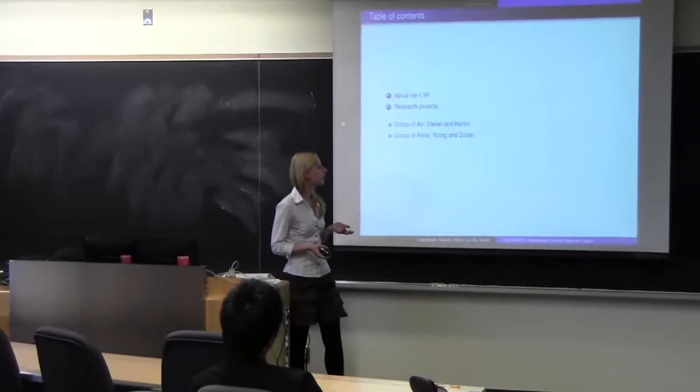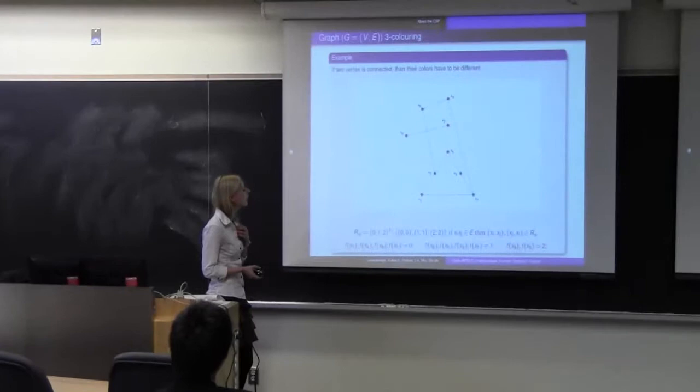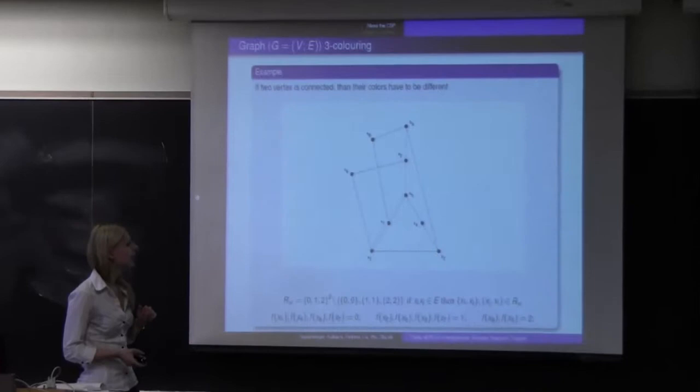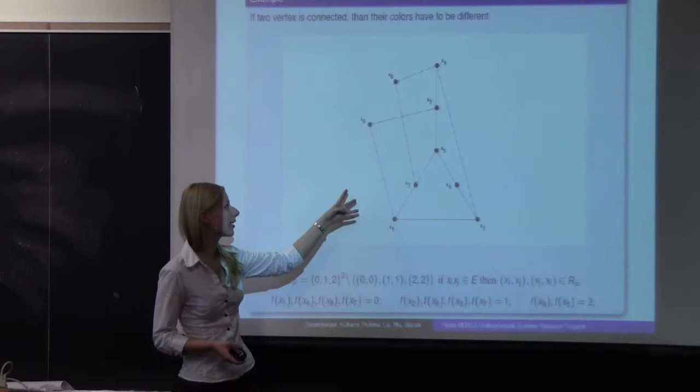First, let me tell you what is CSP — constraint satisfaction problem. For example, if you have a graph, it's reasonable to ask whether we can color it with three colors in a way that if two nodes are connected with an edge, their color has to be different.